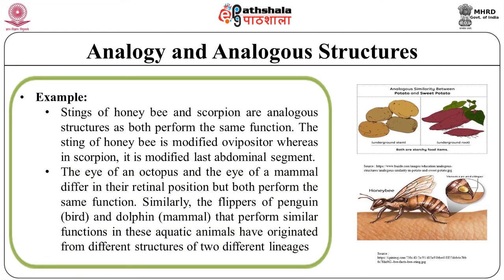The eye of an octopus and the eye of a mammal differ in their retinal position but both perform the same function. Similarly, the flipper of a penguin, which is a bird, and of a dolphin, which is a mammal, perform a similar function in these aquatic animals but have originated from different structures of two different lineages.